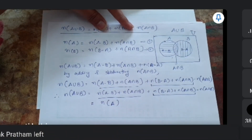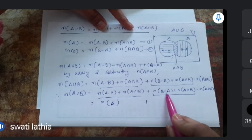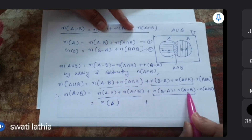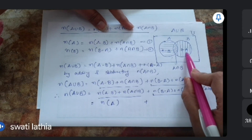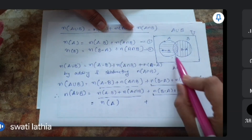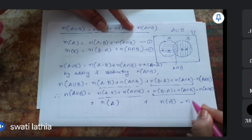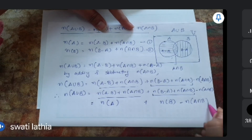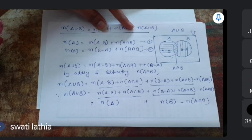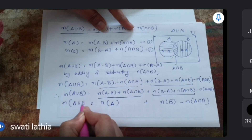n(A) = n(A-B) + n(A∩B). Similarly, b-a ભાગ plus a∩b ભાગ ભેગા કરીએ એટલે આખું circle B આવે, એટલે n(B) = n(B-A) + n(A∩B). બાકી વધ્યું: n(A∩B) as it is. આ ભેગું કરીએ: n(A∪B).